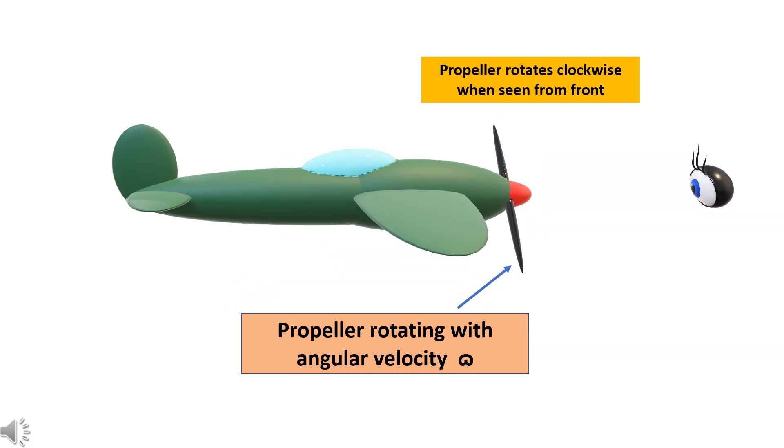For understanding gyroscopic effect, we consider an aircraft with a rotating propeller. Here the propeller is rotating with angular velocity omega. So, the angular momentum is given by the product of moment of inertia of the propeller and omega.